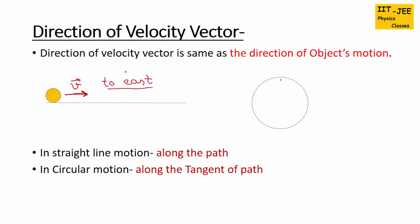If the object is moving in circular motion, we need to find the velocity vector at a specific point. To do that, we draw a tangent at that point — this tangent represents the direction of the velocity vector. So in straight-line motion, the velocity vector is along the path, and in circular motion, the velocity vector is along the tangent to the path.